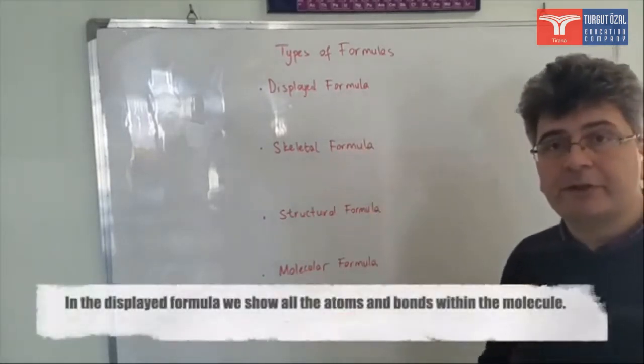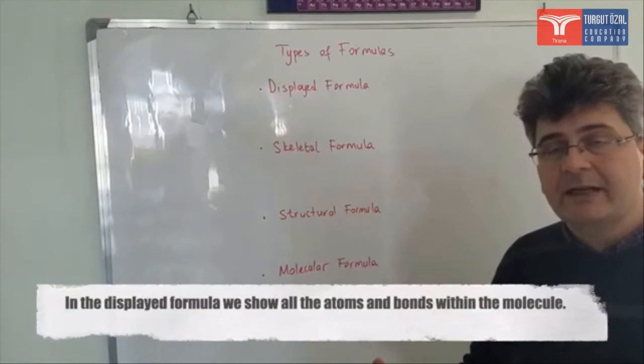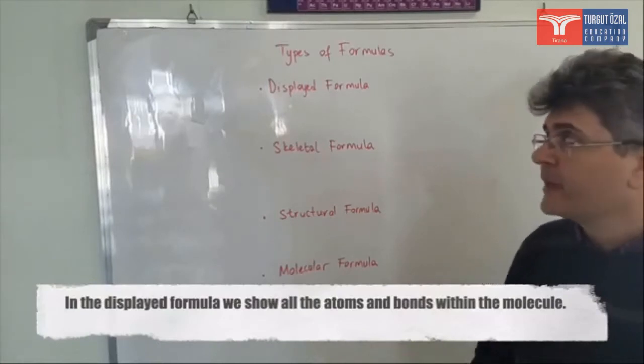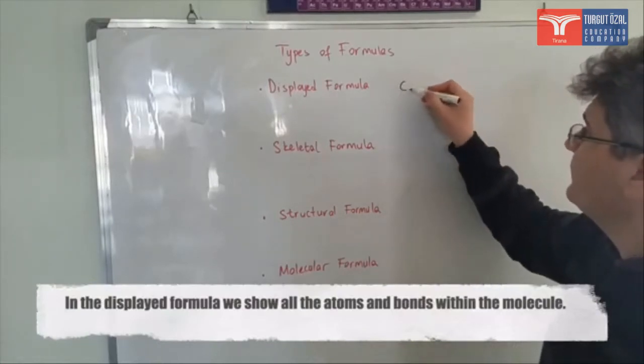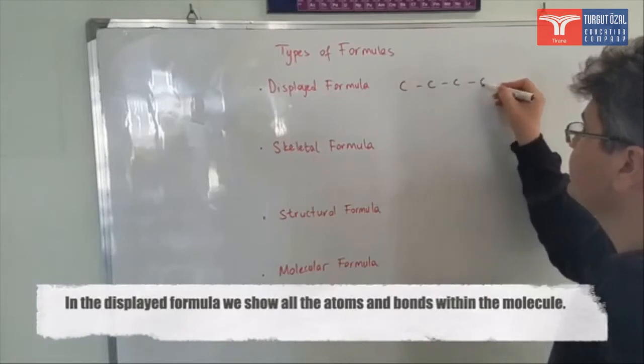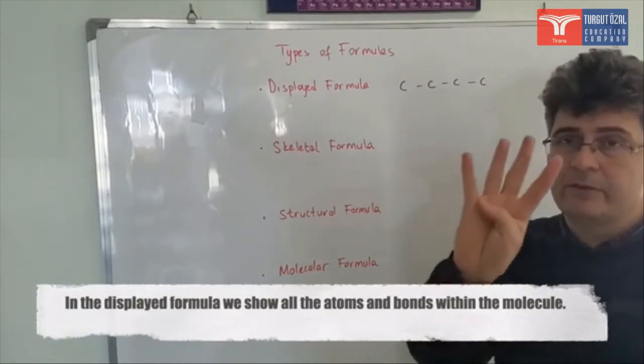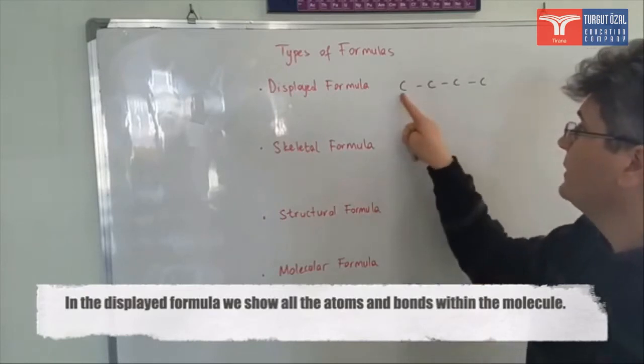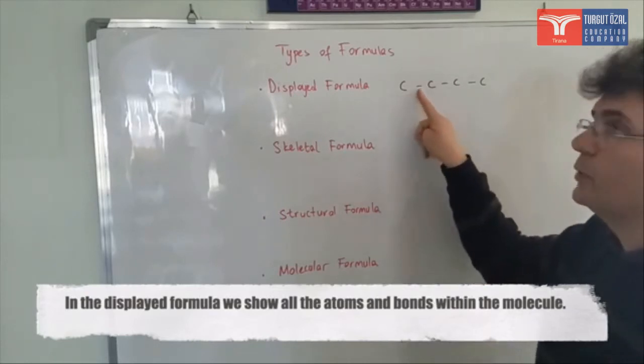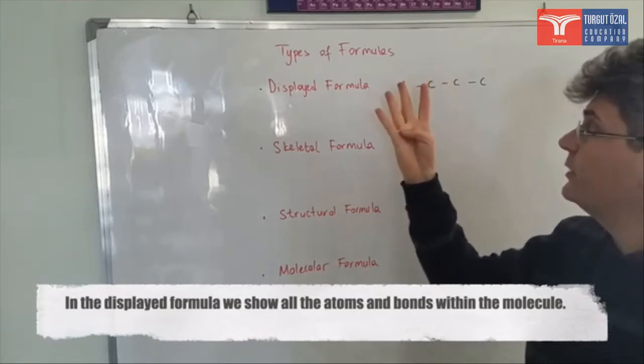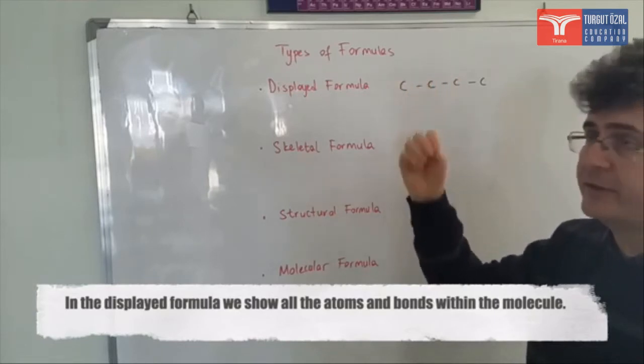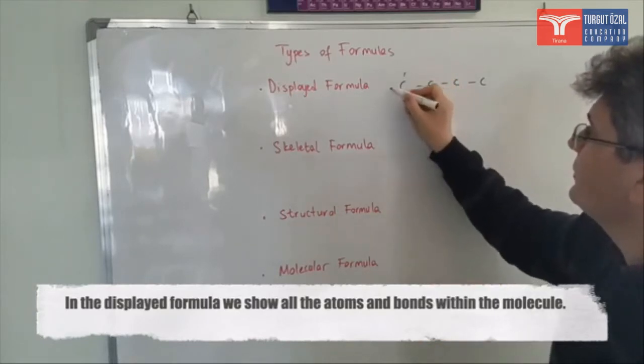In the displayed formula we are showing all the elements and all their connections. Let us have four different carbon atoms. As you know, carbon atoms in organic chemistry are making four connections. For example, this is connected to one carbon atom, so it needs four. It is making one, so three more hydrogens are needed. One, two, three.